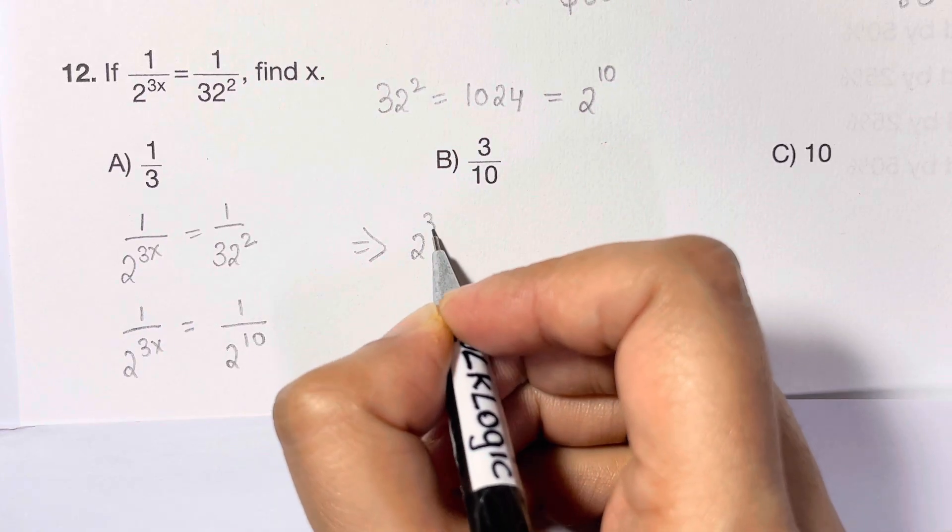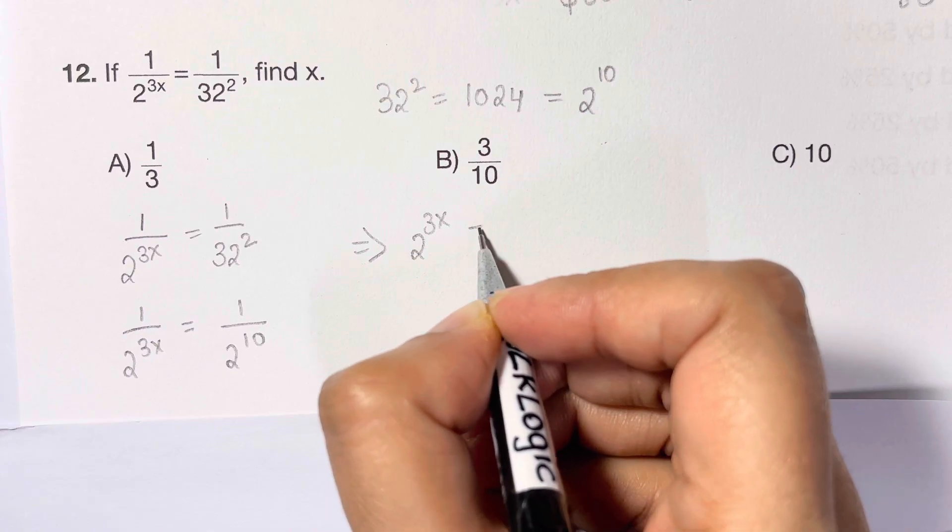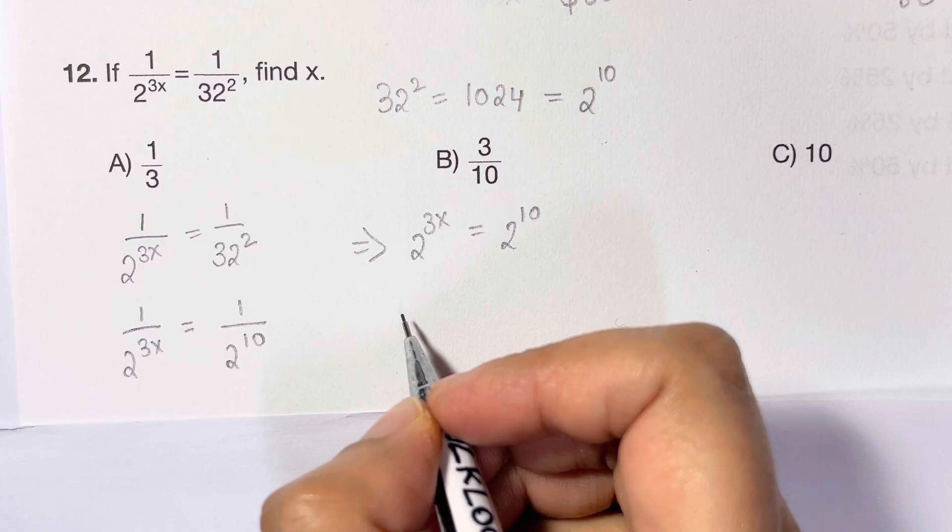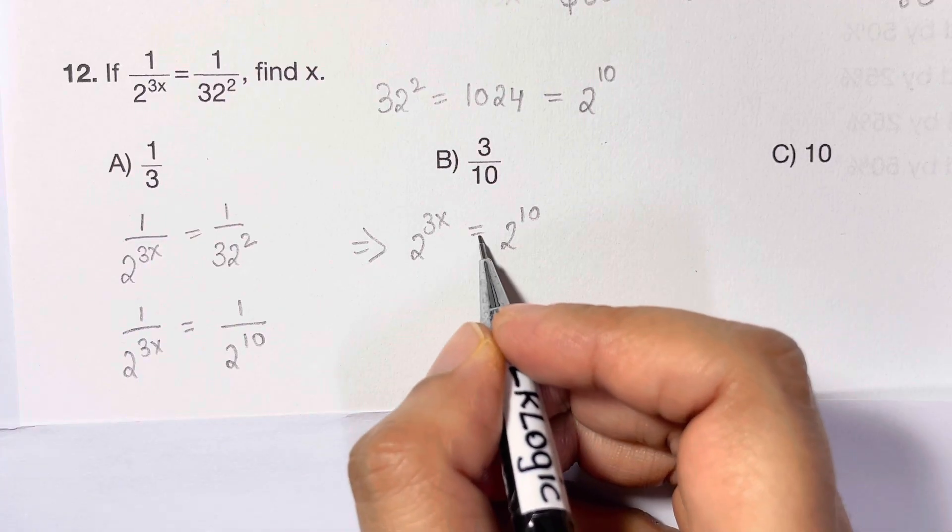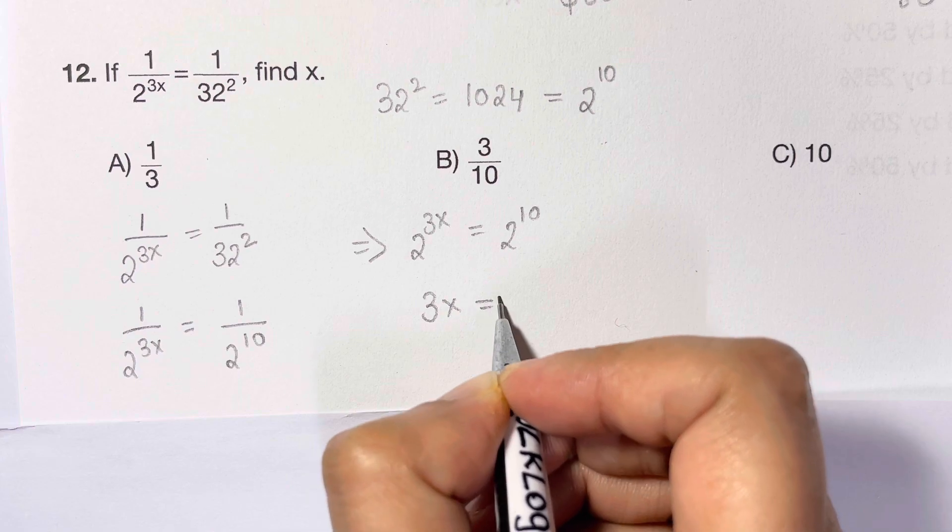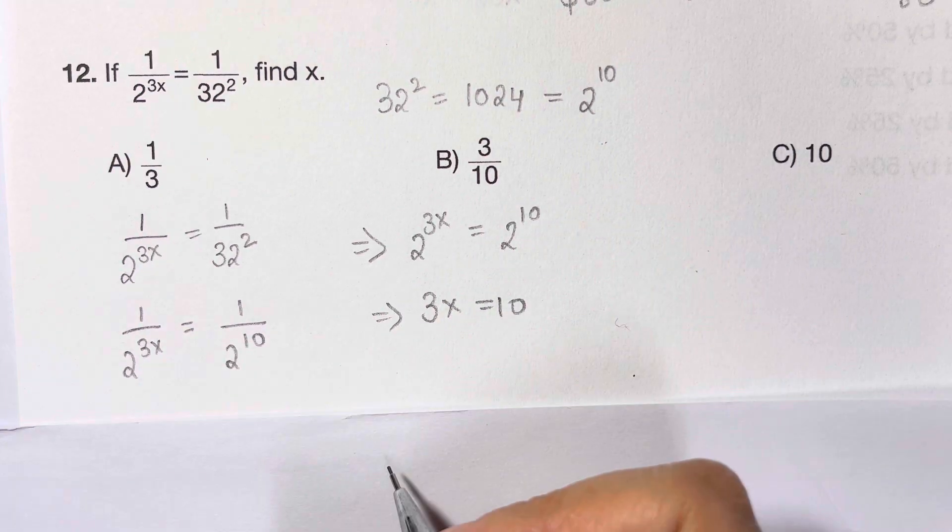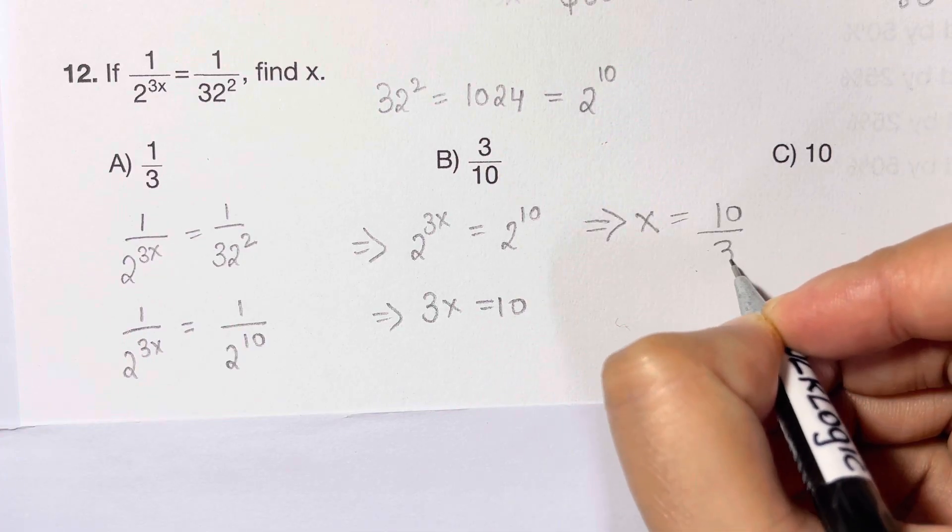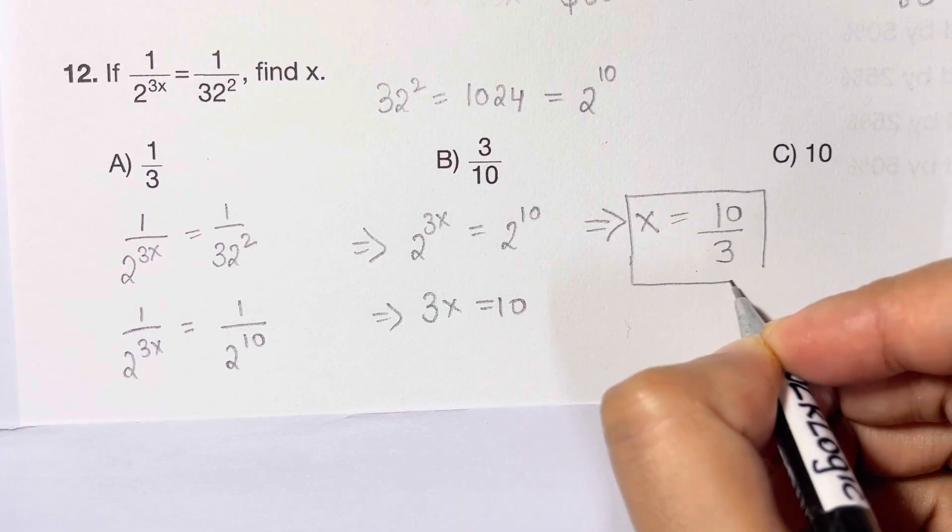Now when you have bases same and this equal between them, you can equate the powers. So 3x equals 10, and what's x? X equals 10 over 3, 10 thirds. That's it, that's your answer.